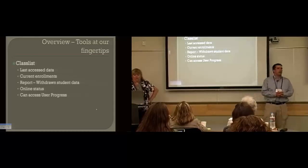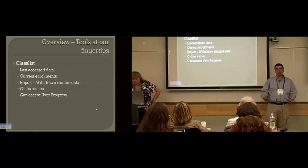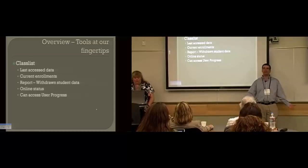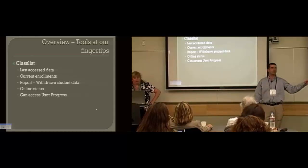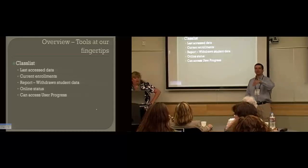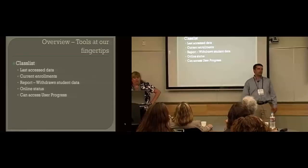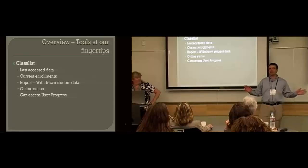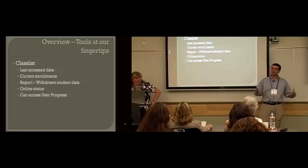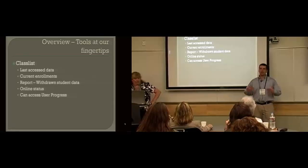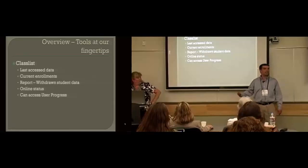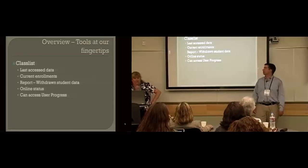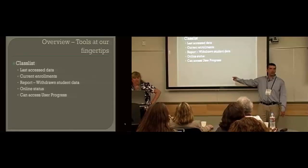As we talk about what information is available to us in Desire2Learn, one of the first tools is a pretty simple one: the class list. The way Front Range has its enrollments configured, we have a Banner system for student information management, and it directly advises the class lists and enrollments in Desire2Learn. That configuration handles putting all courses in place and all students and instructors in those courses. When I get complex with cross-listed courses or additional enrollments, that's where I as the administrator get involved.